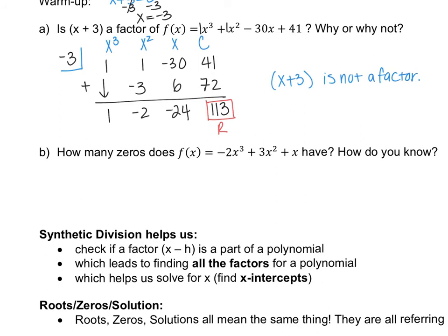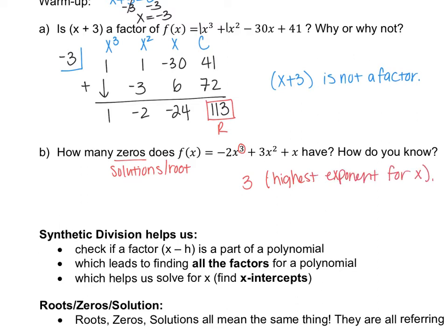The next problem asks us to determine how many zeros this function has — basically, how many solutions or how many x's would you have. Another way to say zeros or solutions is roots. Based on this equation, the highest power here is 3, so you always look at your highest power, and that determines how many solutions or zeros you have. In this case, we're going to have three zeros.